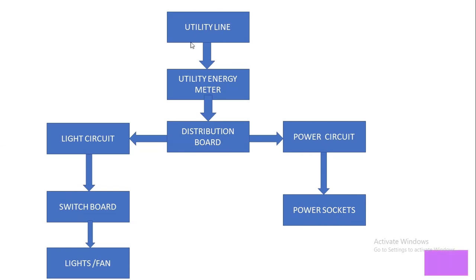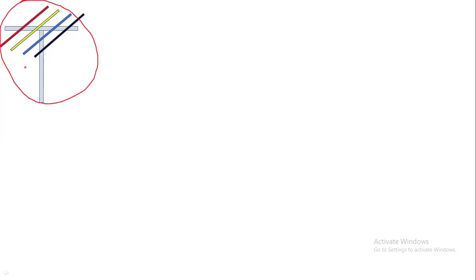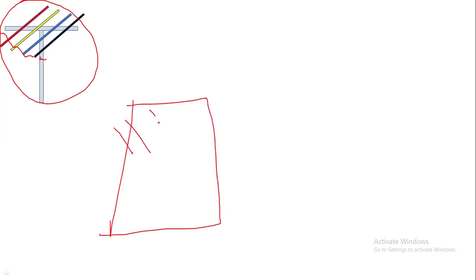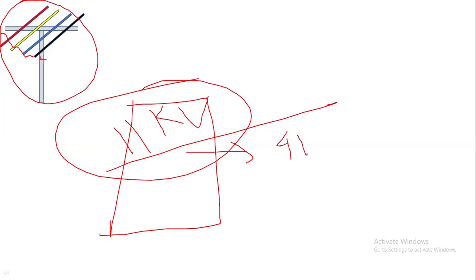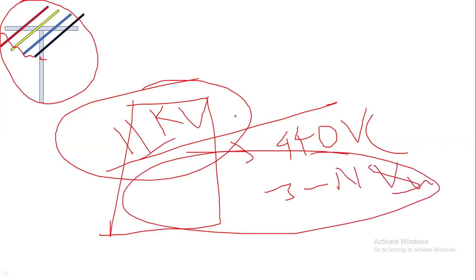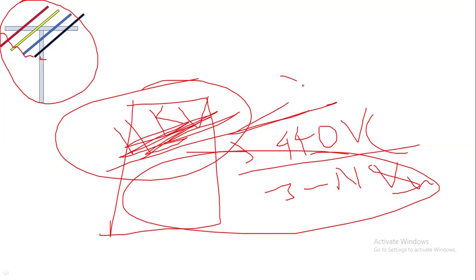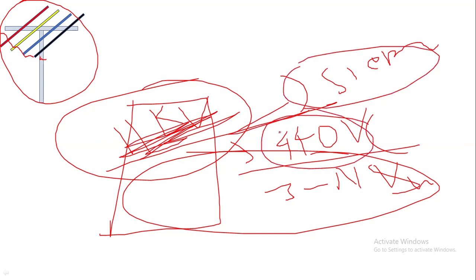Now let's look at the physical view — how the utility line, energy meter, and DB actually look. Here we have utility line poles, or distribution poles. This is an overhead line distribution system with three live wires and one neutral — a four-wire system. From the distribution substation, 11 kV is stepped down to 440 volts, which is a three-phase neutral system. This voltage is stepped down with the help of a step-down transformer, and this four-wire system distributes power towards the colony.